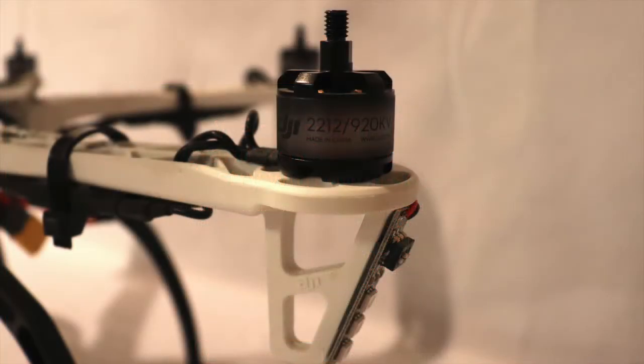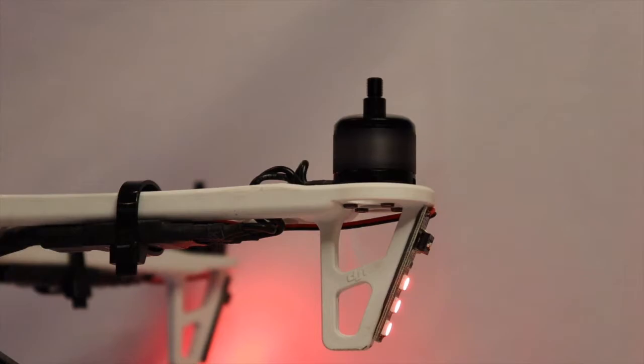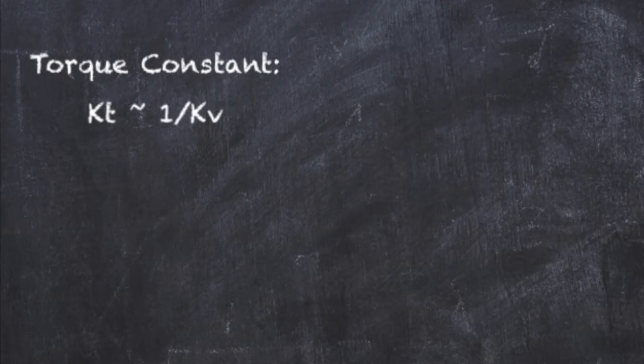DJI E300-2212-920KV motors were chosen with reliability and payload in mind. The first number refers to the dimensions of the stator, and the second number is the motor speed in RPM that results in a 1-volt back-EMF.